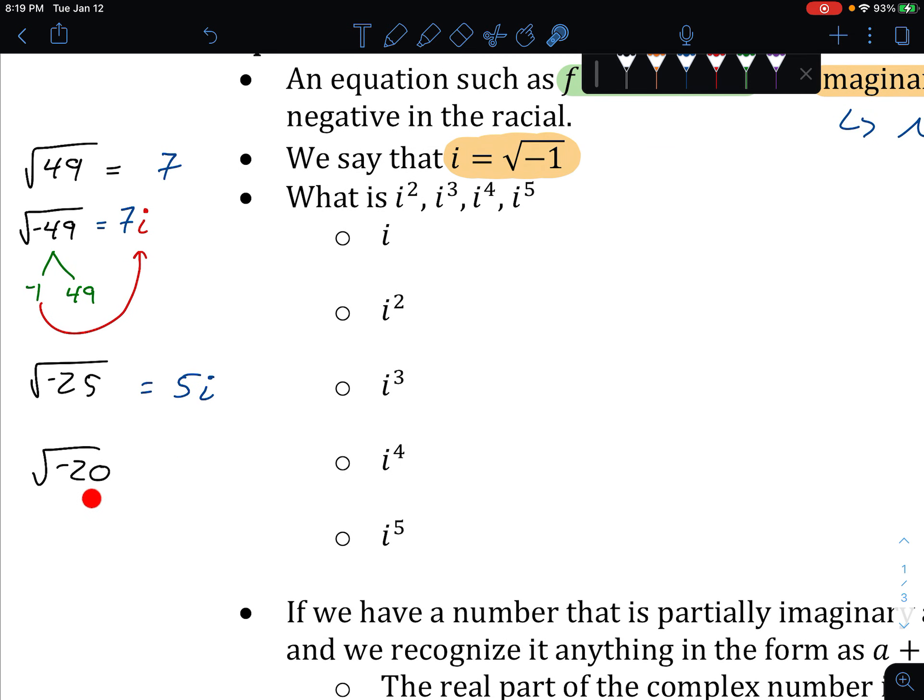Over here, √(-20), if I were to break this up just like I did up above, essentially this is a negative 1, a 4, and a 5. These are the exact factors of it. I know the 4 is going to come out as a 2. The 5 I know cannot come out. So the 5 stays. The 4 comes out as a 2. The negative 1 comes out as an i.